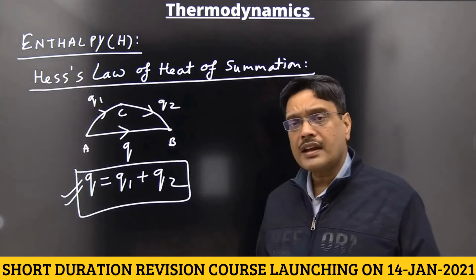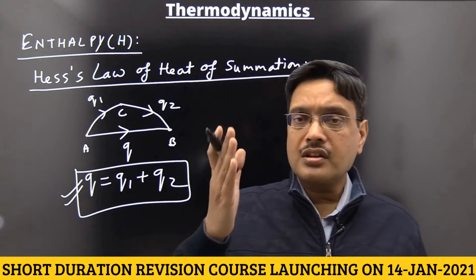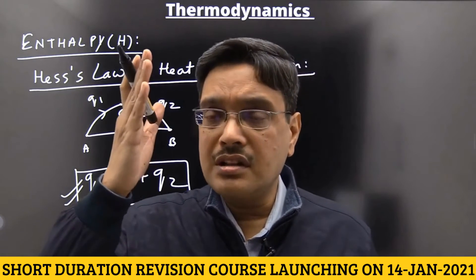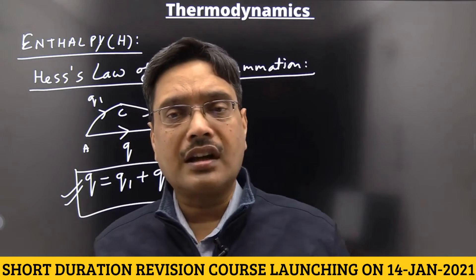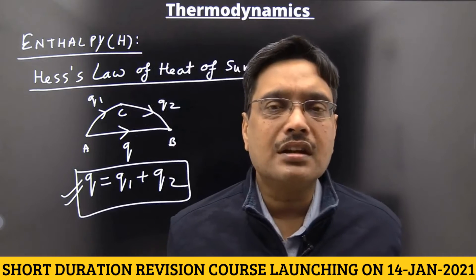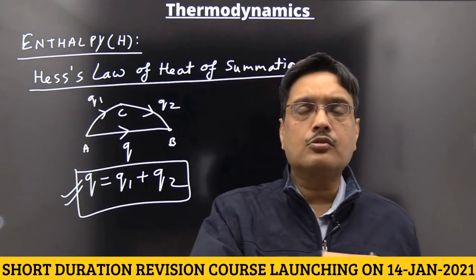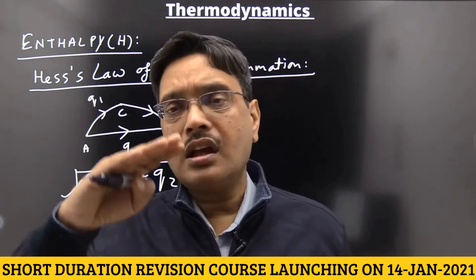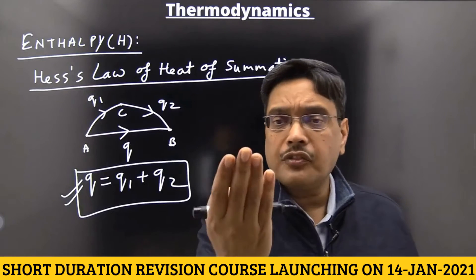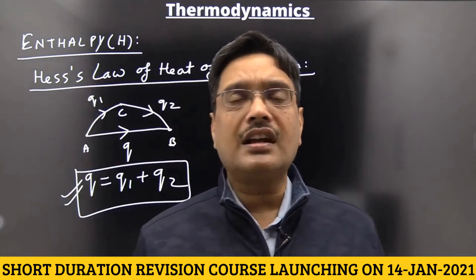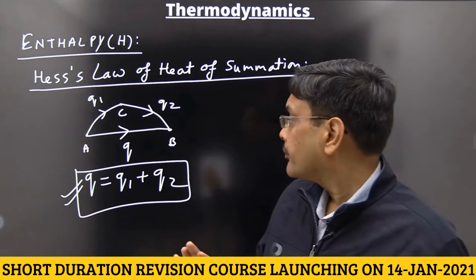In this law, you can add the equation, you can reverse the equation, you can multiply the equation, you can divide the equation. Whatever work is done on the equation, the same work is done on the value of Delta H. If you divide the equation by 2, then Delta H is also divided by 2. If you multiply by 2, Delta H is also multiplied by 2. If you add, Delta H is also added. If you subtract, Delta H is also subtracted. If you reverse the equation, the sign of Delta H becomes opposite.